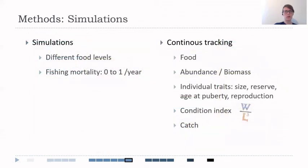We did a few simulations on different food levels, as well as different fishing mortalities ranging from zero to one per year. At the same time, we were continuously tracking the food, the abundance and biomass of the population, as well as individual traits like size, reserve, age of puberty and reproduction. We also estimated the weight and length and calculated the corresponding condition index of the fish. We also tracked the amount of fish that was caught during fishing.